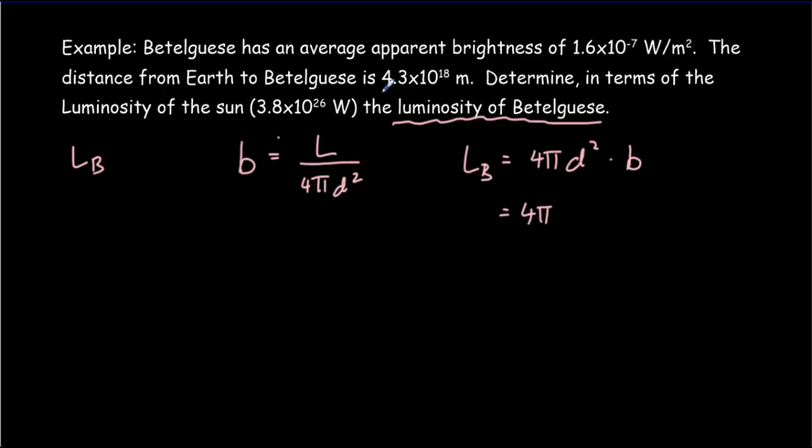Our distance was 4.3 times 10 to the 18th, that'll be squared. Then we multiply by this brightness, 1.6 times 10 to the minus 7. Notice all the units are MKS, so we don't need any conversions. Multiply that out and you should get about 3.7 times 10 to the 31, and that would be in watts.